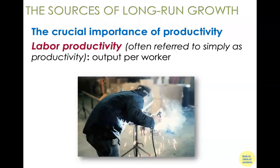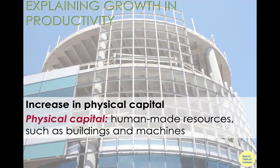To understand the sources of long-run growth, we first need to understand labor productivity — output per worker. This is closely related to long-run growth, and you can even approximate long-run economic growth by looking at labor productivity. But what determines labor productivity? Economists have examined data over time and across countries and identified the following key factors.